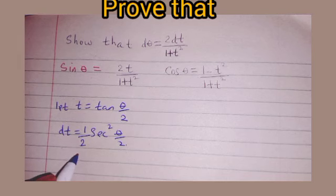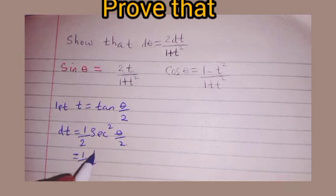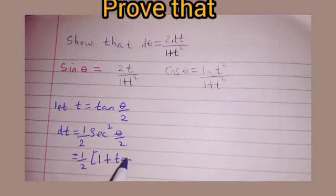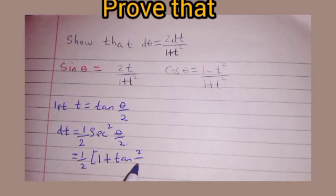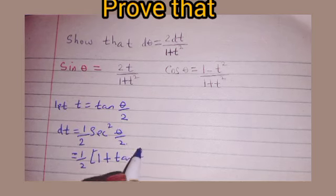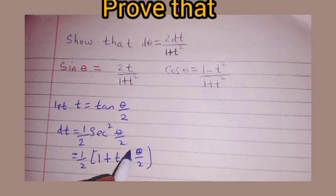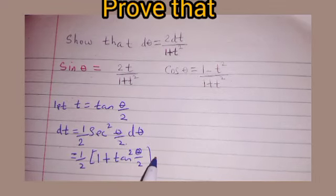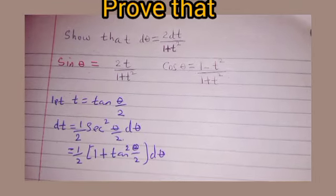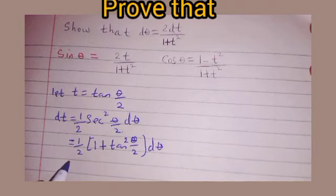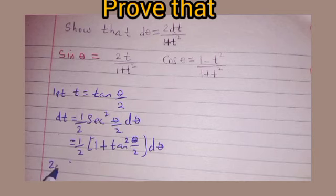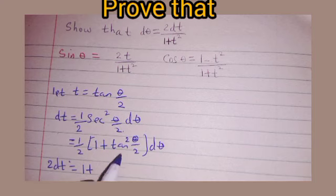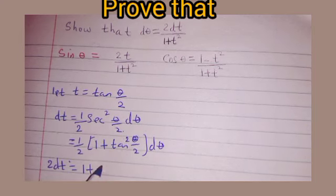This can be written as (1/2)(1 + tan²(θ/2)) dθ. From here we can multiply both sides by 2, so you get 2dt = (1 + tan²(θ/2)) dθ.